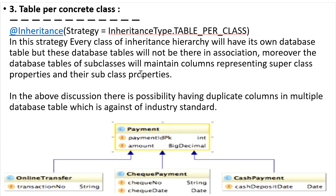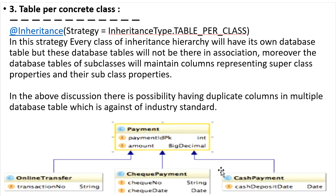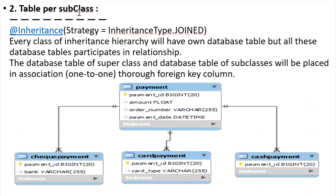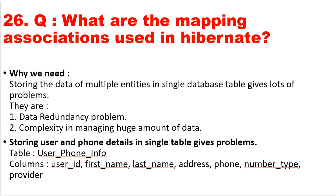The third strategy, Table Per Concrete Class, uses @Inheritance(strategy = InheritanceType.TABLE_PER_CLASS). Every class has its own table, but these tables are not in a relationship. Each subclass table maintains columns for both the superclass properties and its own properties. The limitation is that superclass columns are duplicated across multiple tables, which is against industry standards. Therefore, Table Per Subclass Hierarchy with proper relationships between tables is the recommended approach.